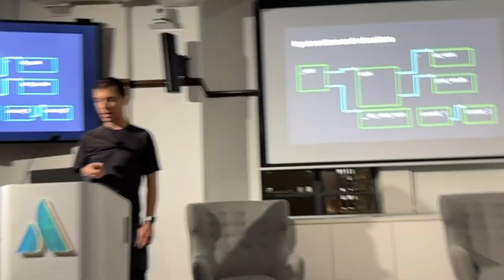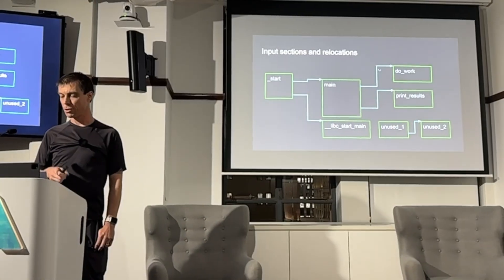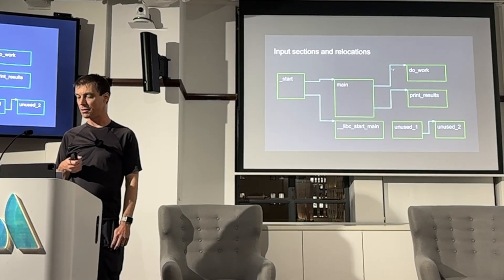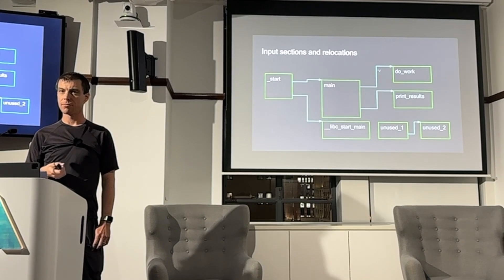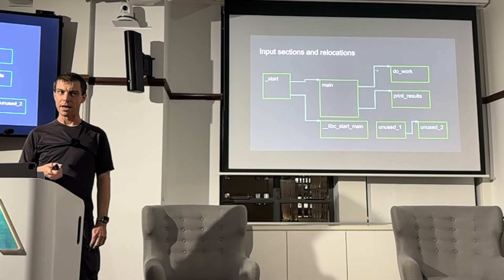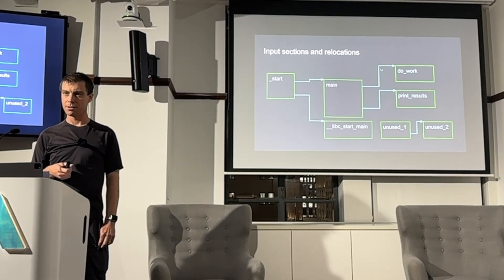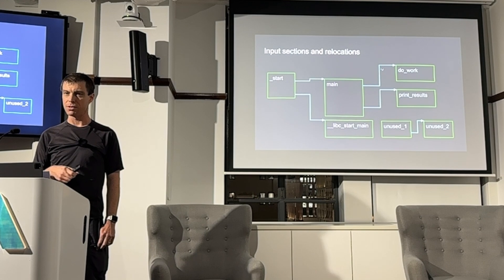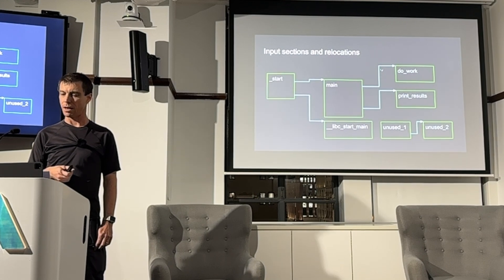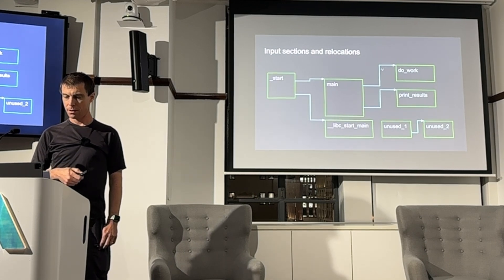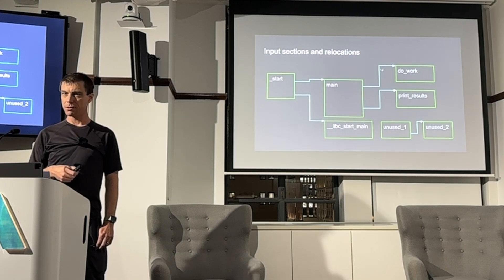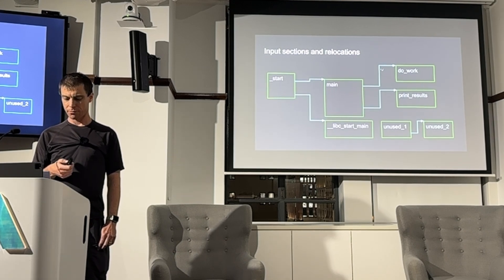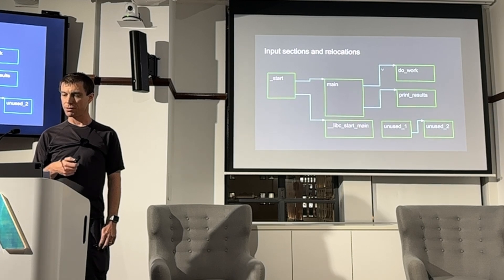In this diagram, unused one and unused two aren't reachable from start, so the linker can throw them away and they don't need to go into the final binary. The green squares are sections each containing a single function, and the blue arrows are relocations. A relocation is an instruction to the linker to place an address at a particular offset within a section when it writes that section to the output file. ELF files on Linux have many kinds of relocations, up to about 40.